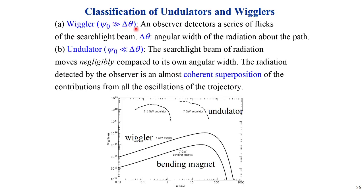An observer detects a series of flashes of radiation in the wiggler case because the large oscillation motion means delta-theta is the angular width above the path. For an undulator, the angle is small. The search beam of radiation moves negligibly compared to its own angular width, so the radiation detected is an almost coherent superposition. Therefore for the undulator, the intensity and brightness are higher.